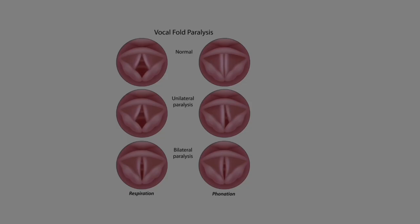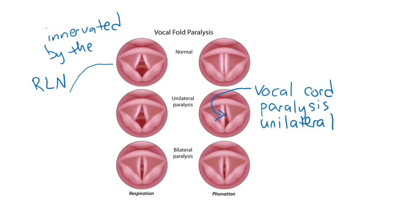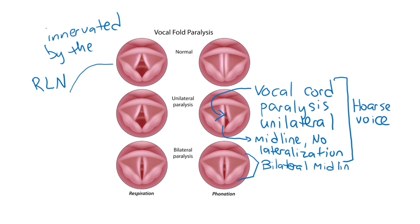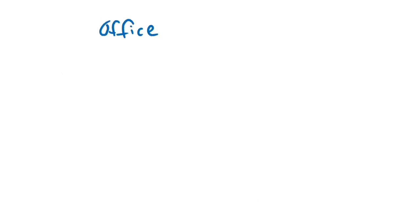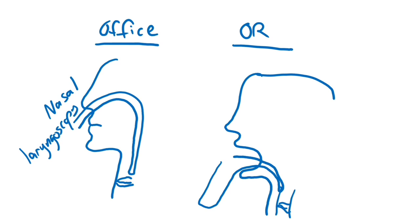The recurrent laryngeal nerves innervate the vocal cords and unilateral damage to the recurrent laryngeal nerve can cause unilateral vocal cord paralysis, seen on laryngoscopy as the cord laying in the midline without being able to lateralize. Clinically this would sound like a very hoarse voice. Bilateral recurrent laryngeal nerve injury would result in bilateral midline collapse of the vocal cords which could lead to airway obstruction and need for emergent tracheostomy. It is a good idea to document function of the recurrent laryngeal nerves prior to your thyroid surgery by indirect office laryngoscopy through the nose or by direct laryngoscopy through the mouth at the beginning of the surgery prior to intubation.